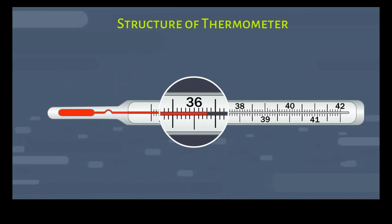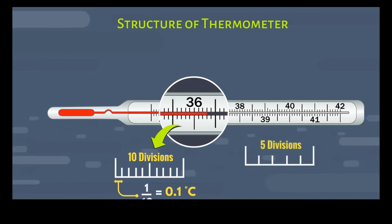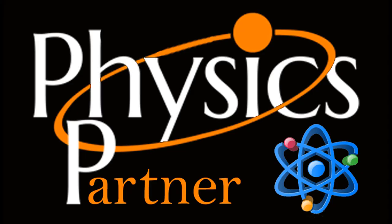You can see here closely, there are 10 divisions between 36 and 37. So, these 10 divisions show that each one is 0.1, which means 36.1, 36.2, 36.3, 36.4. So, the reading is 36.4. But in some thermometers, there are 5 divisions also. 1 over 5 means 0.2 degrees Celsius.